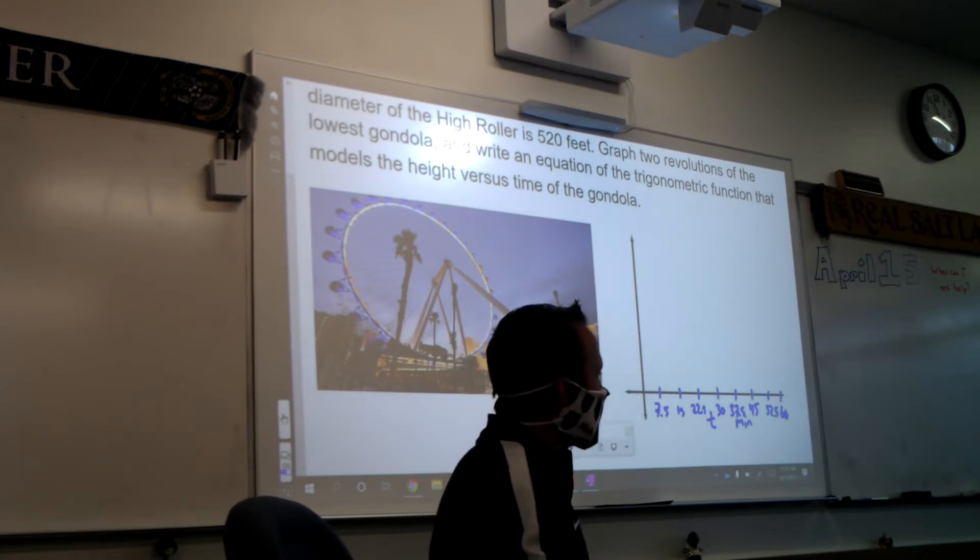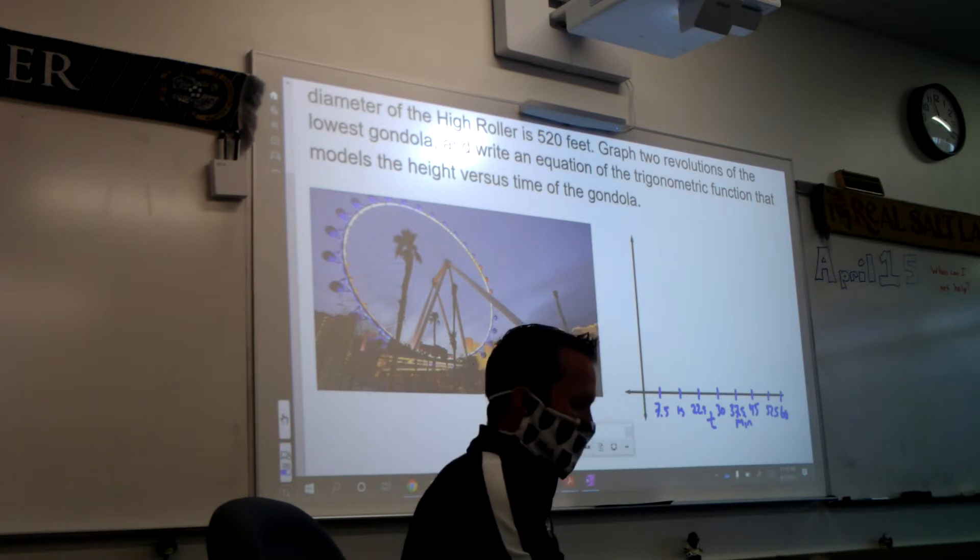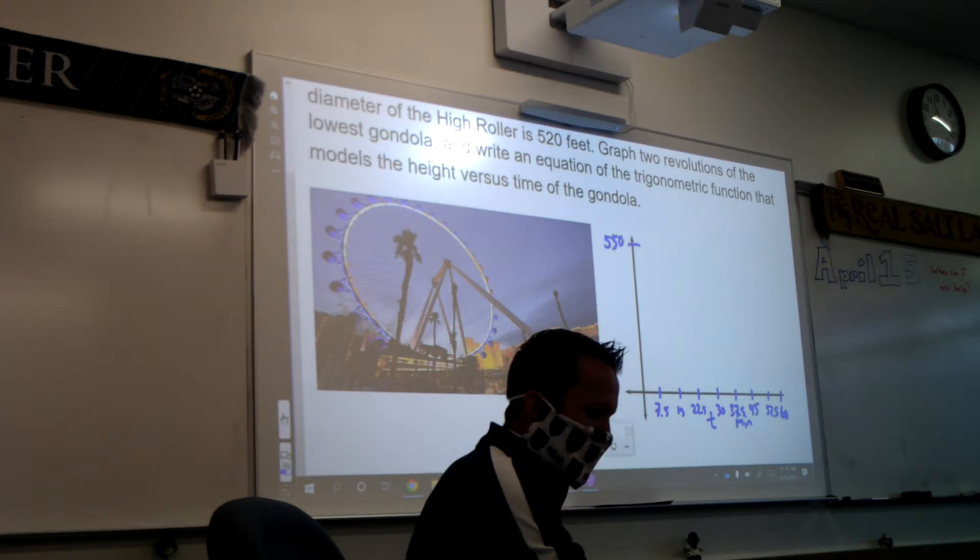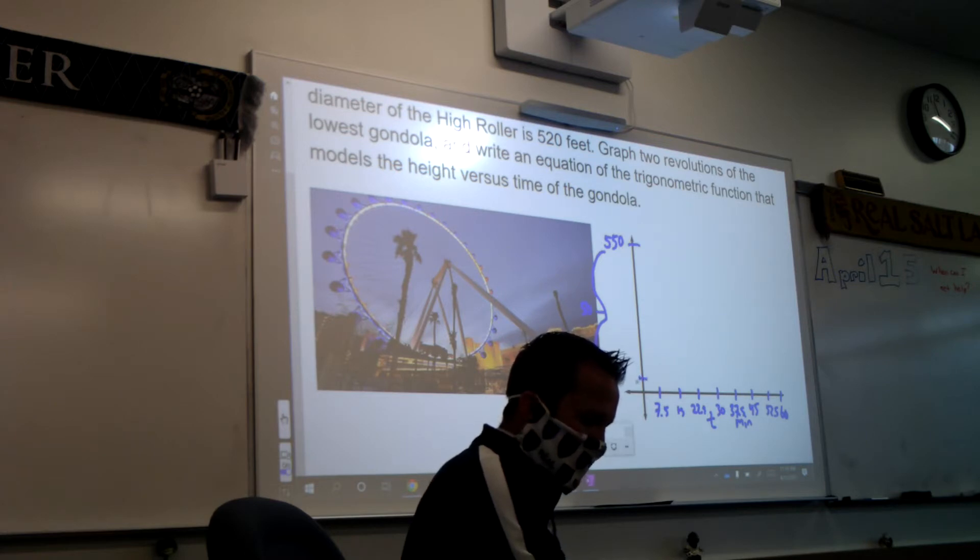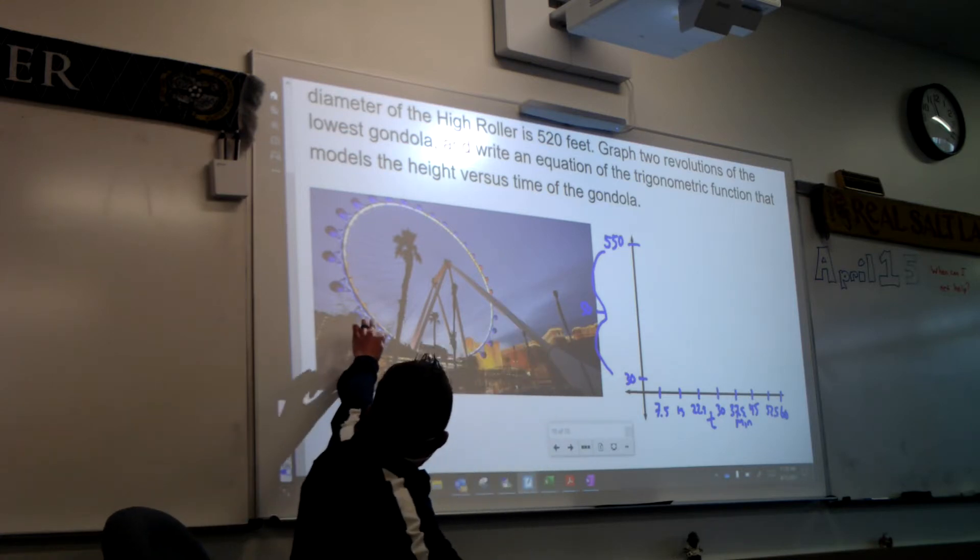Alright, now what did you guys come up with the heights? What's our max? 550. So I'm going to put 550 clear up there. What was the diameter of this? 520. So what that means is that how far off the ground is this? 30 feet. Which makes sense because we have to have space for that little ball to be.